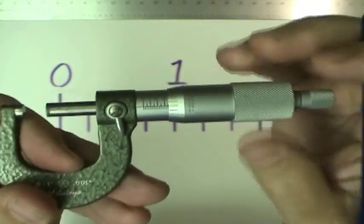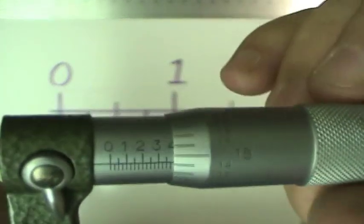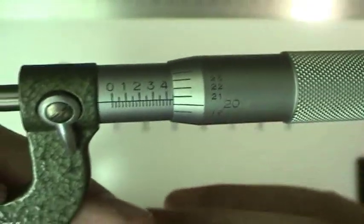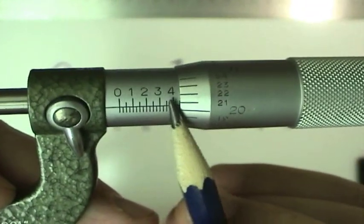So if we go all the way out, notice that this scale is reading 0.1, 0.2, 0.3, 0.4. Each one of these marks is a tenth of an inch.